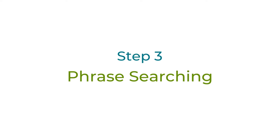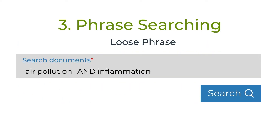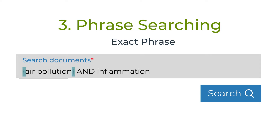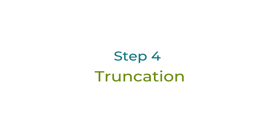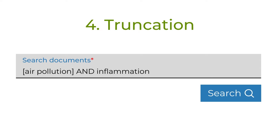Third, don't forget phrase searching. Scopus allows you two different types of phrase searching: loose phrase and exact phrase. In a loose phrase search, the words must be found together in the database, but this allows for various forms of the words, such as singular versus plural. To indicate a loose phrase search, place quotation marks around your phrase. If those variations yield too many inaccurate results, try an exact phrase search by placing brackets around the phrase. Fourth, can you truncate any of your terms effectively? Truncation allows you to pull in variations of a word without typing out each variation. To truncate in Scopus, enter the root of the word followed by an asterisk. In our example, truncating 'inflammation' after the T will yield results with both 'inflammation' and 'inflammatory.'